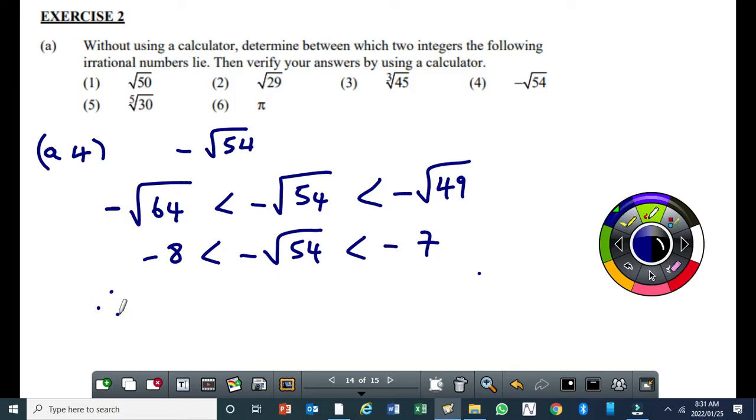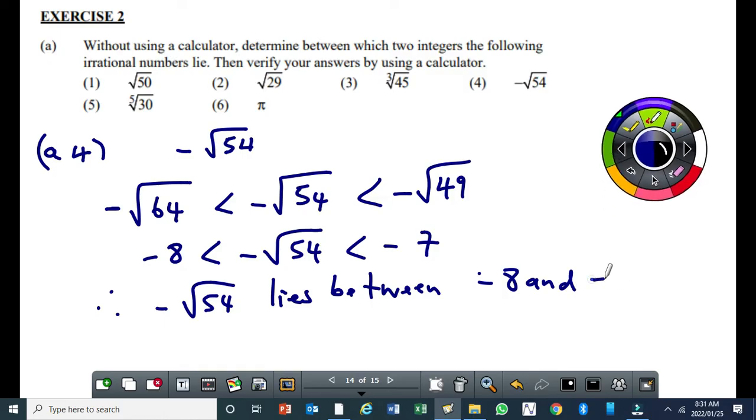Then here we can say, therefore, minus square root of 54 lies between minus 8, because that's the smallest, and minus 7. Then you are done. So if you do your working out like this and you write your conclusion, you are assured of your full marks. You need to learn to show your working out.